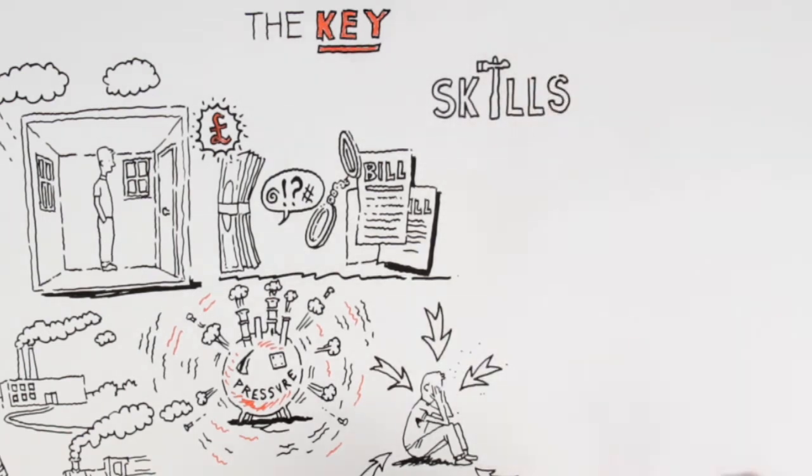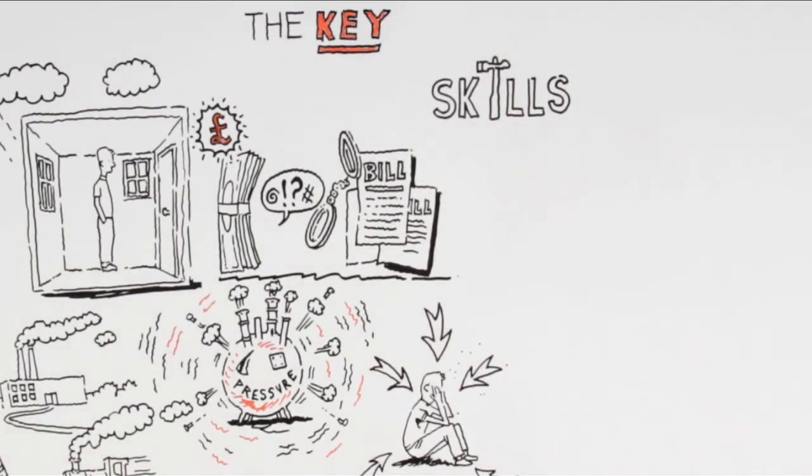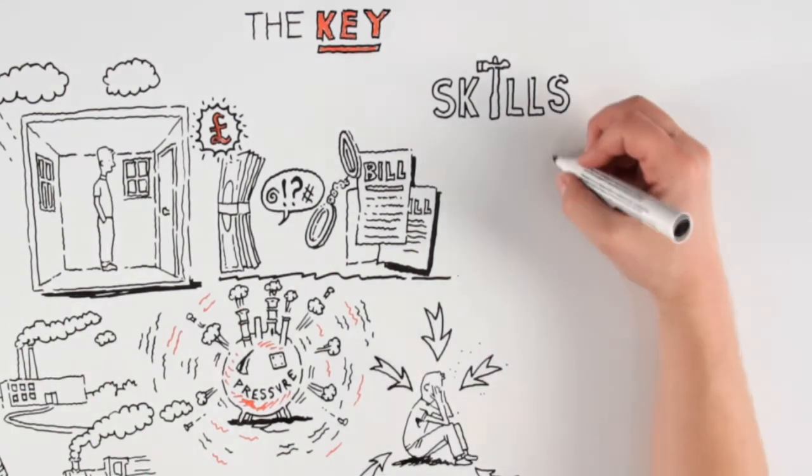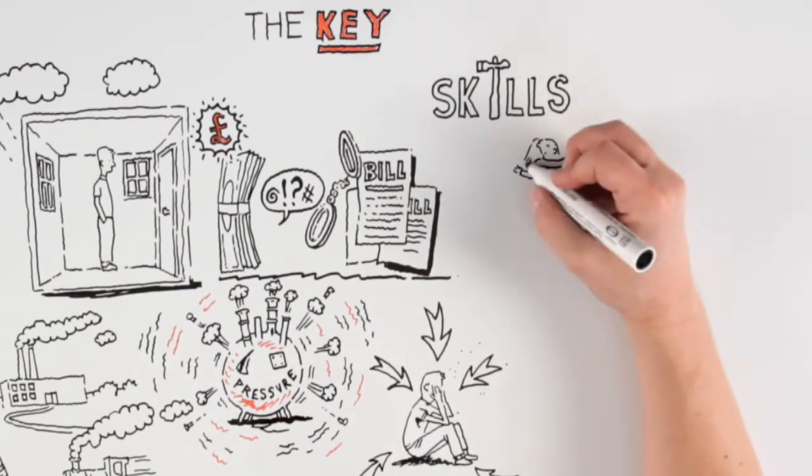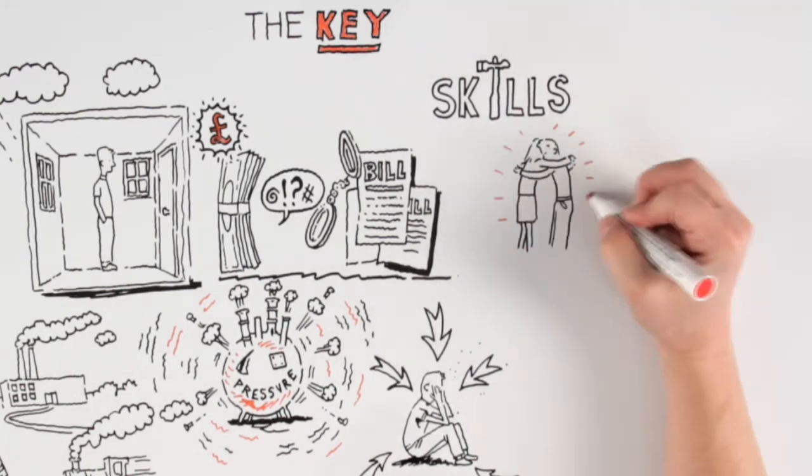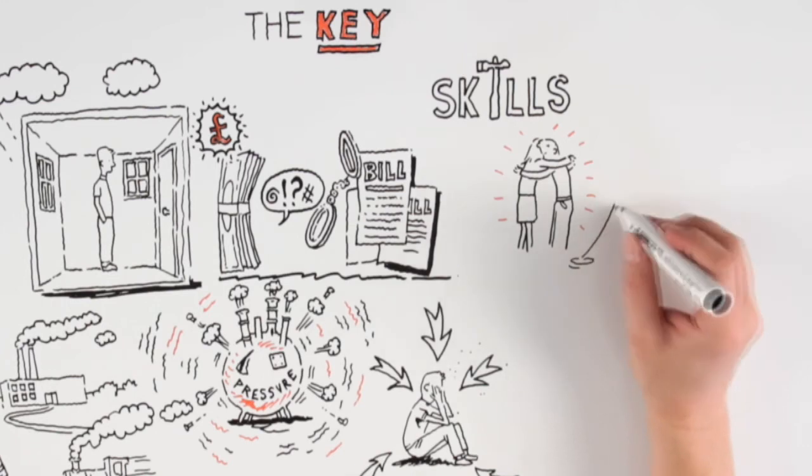Finally, in phase three, we identify and build positive influences in your life to sustain you if things get rough again. This means rebuilding support structures with family and friends, and developing hobbies and interests,